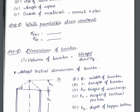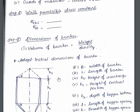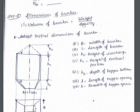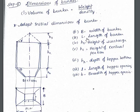Step two is the dimensions of the bunker. We have to find the volume of the bunker first, according to the weight and the density given. This tells us how much volume is required to store that amount of material. Then we adopt the initial dimensions of the bunker — we assume the dimensions according to the volume we calculated.